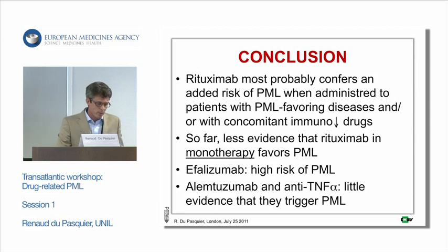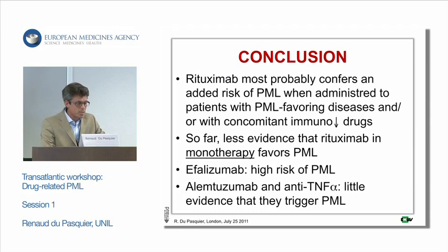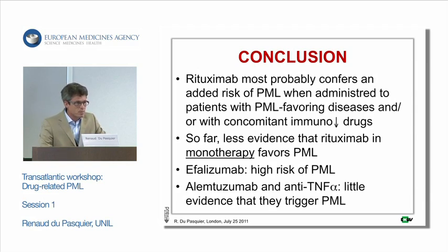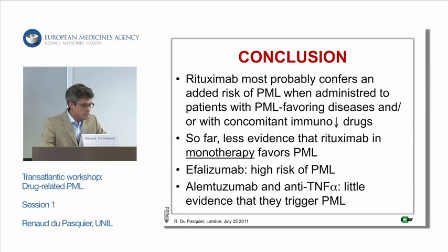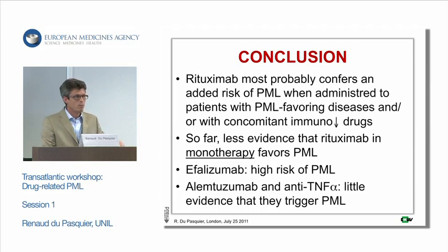In summary: rituximab most probably confers an added risk of PML when administered to patients who have PML-favoring diseases and/or when administered with concomitant immunosuppressive drugs. There is less but still some evidence — especially from rheumatoid arthritis — that rituximab in monotherapy may favor PML, though this is much less clear than for natalizumab. Efalizumab confers a very high risk of PML even in monotherapy, but has been withdrawn. There are no convincing data that alemtuzumab and anti-TNF-alpha really increase the risk of PML above background.